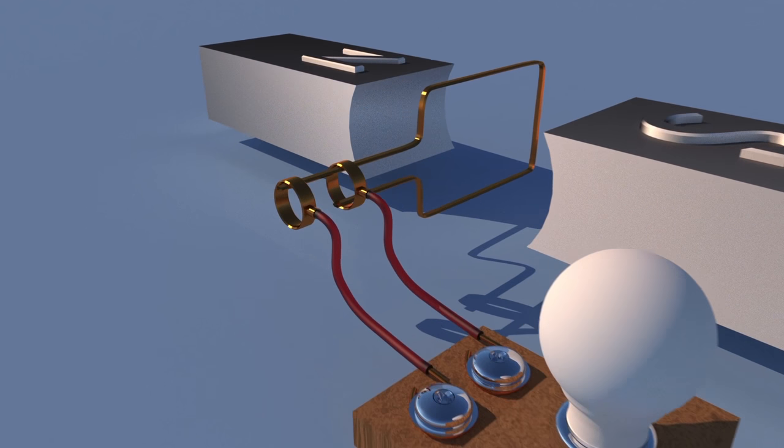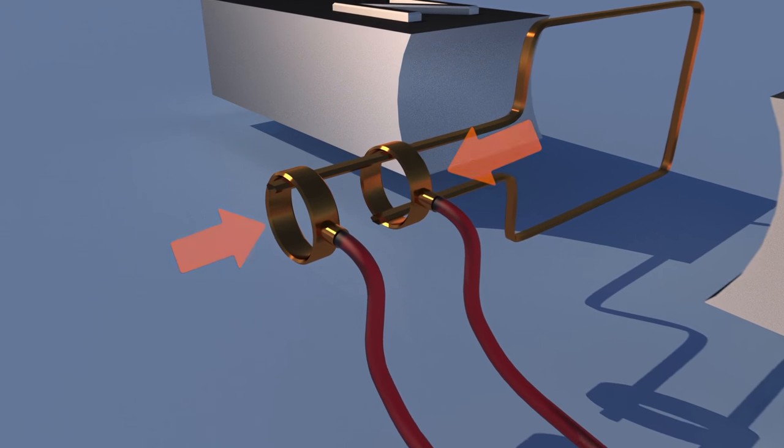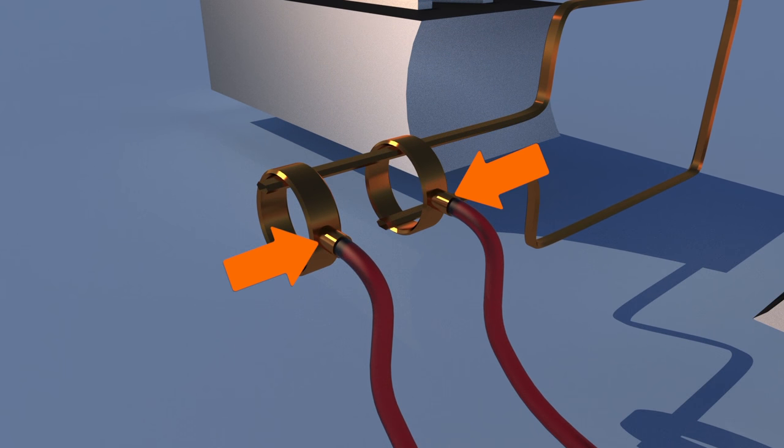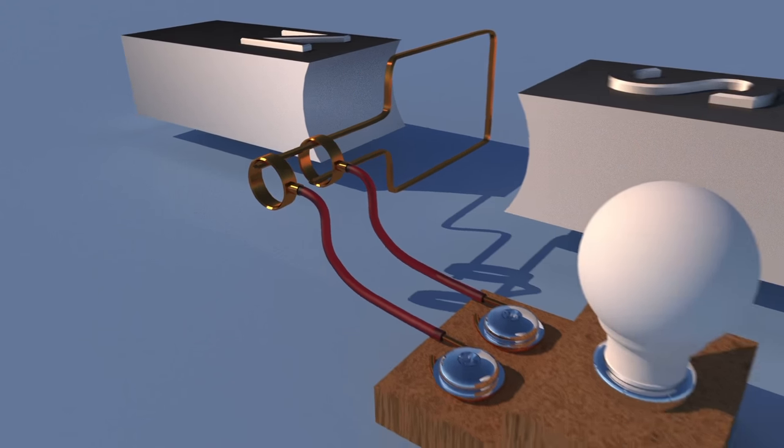There are two more important components in this generator: the slip rings and the brushes, which complete the circuit. This is always necessary to get current flow.